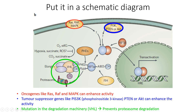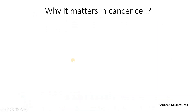We also have another scenario: even if the PHD enzyme is present, the VHL enzyme itself could have a mutation — a nucleotide change in its subunit — so that PHD may not recognize the VHL complex, even though both are present. This ensures that HIF-1 alpha would not undergo proteasomal degradation, even though PHD enzymes are there and oxygen levels are high.